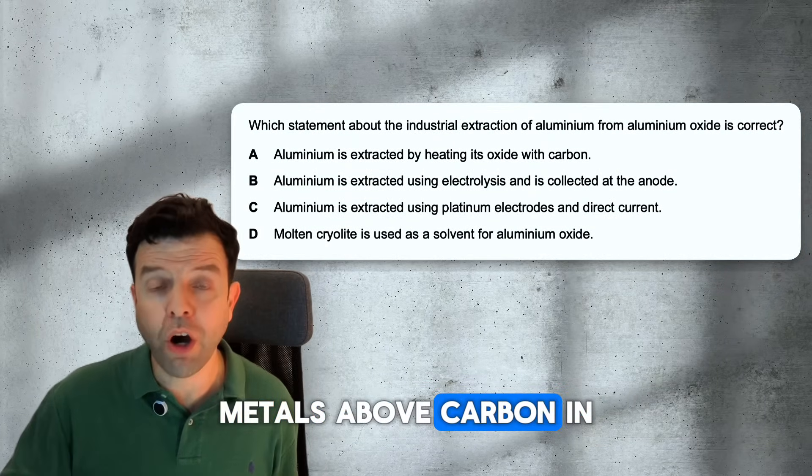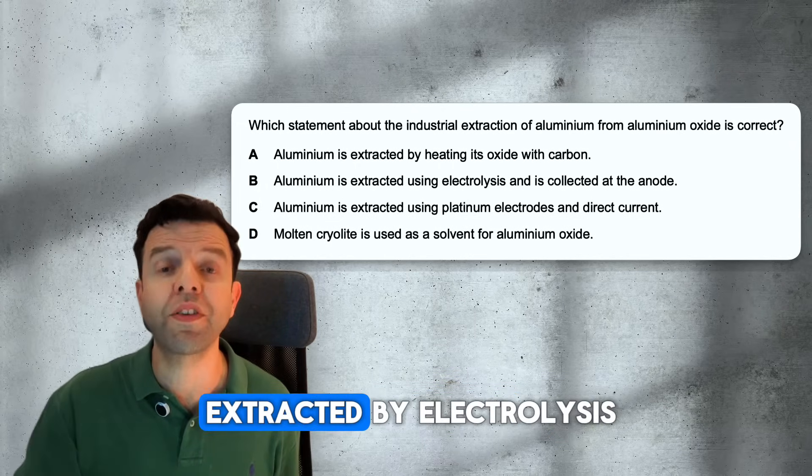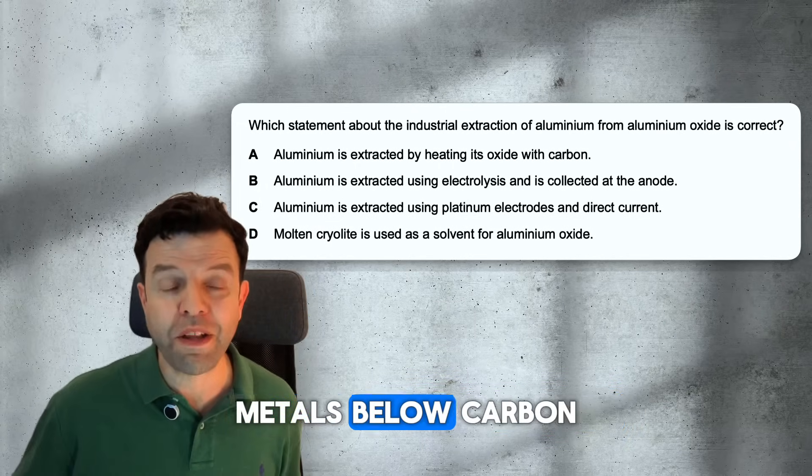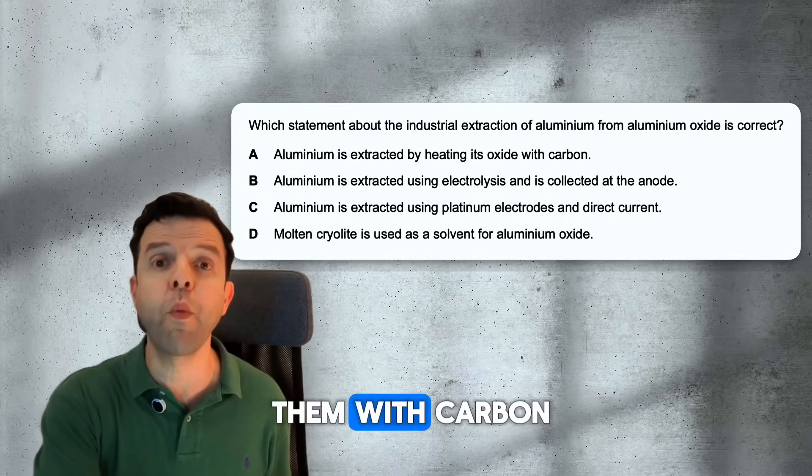Metals above carbon in reactivity series, such as aluminum, are extracted by electrolysis. Metals below carbon are extracted by reducing them with carbon.